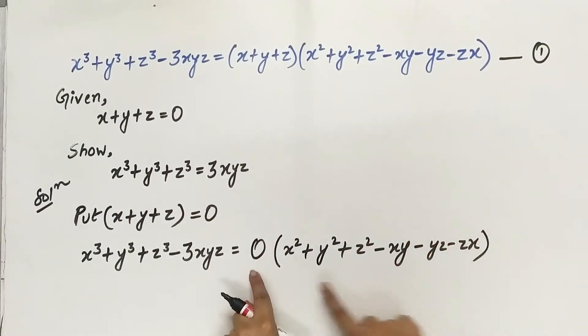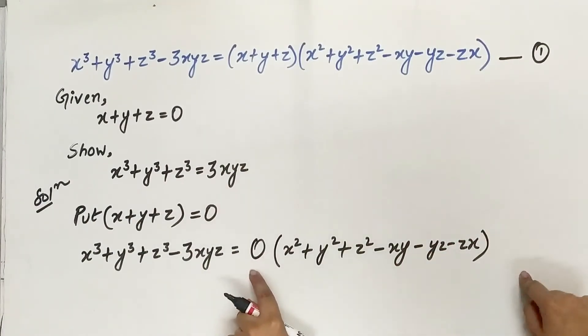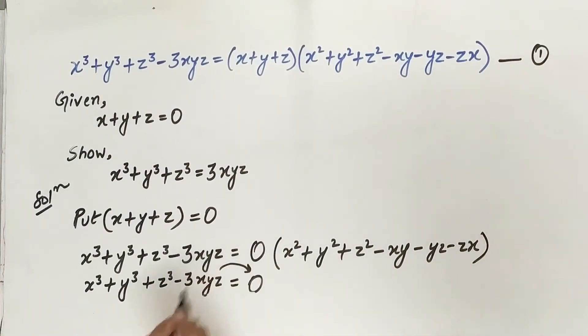Now 0 multiplied by any number is 0. Transpose 3xyz to the right side.